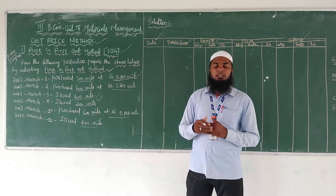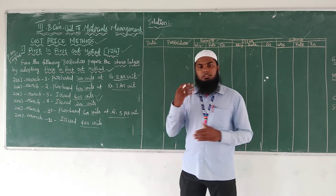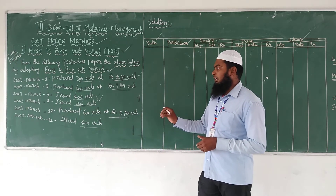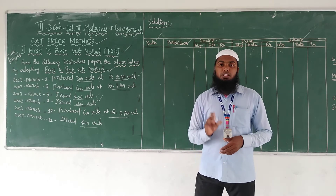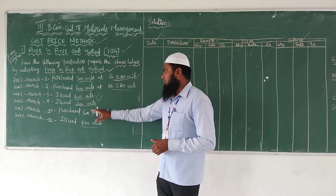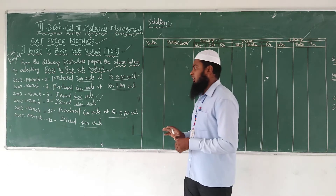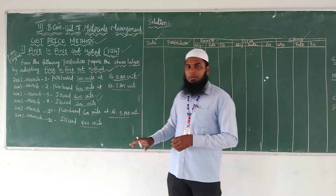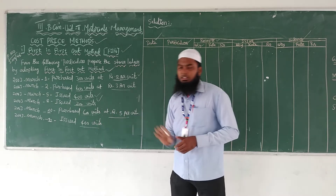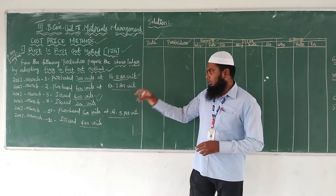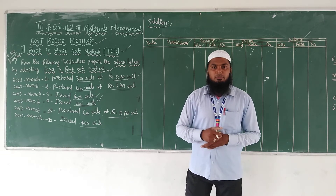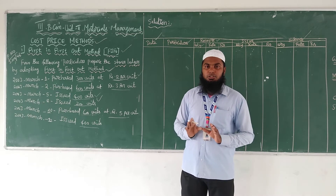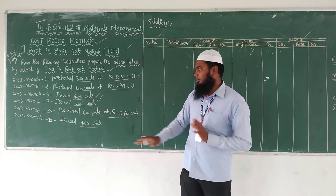That means March has 2 units that are issued when the transaction will be processed. The 5th point is that March has 5 units — those 5 units are from the first purchase. The last point is that 3 units are from the third purchase, and 3 units are in the same.